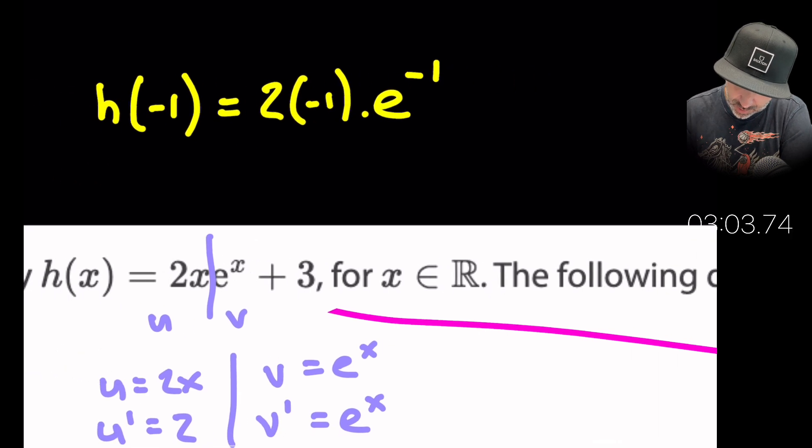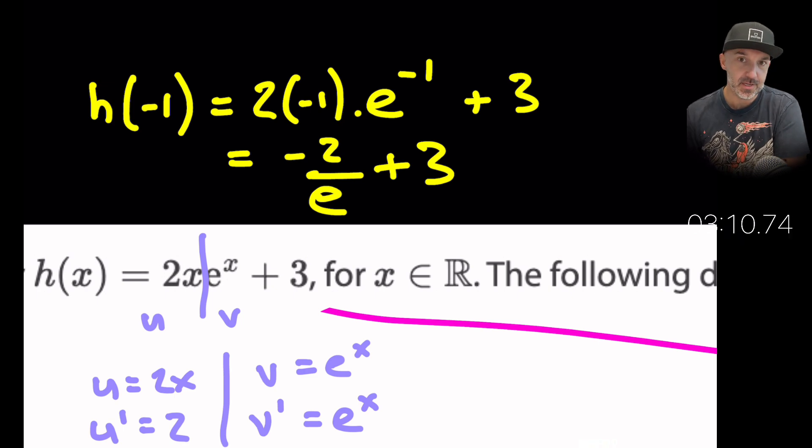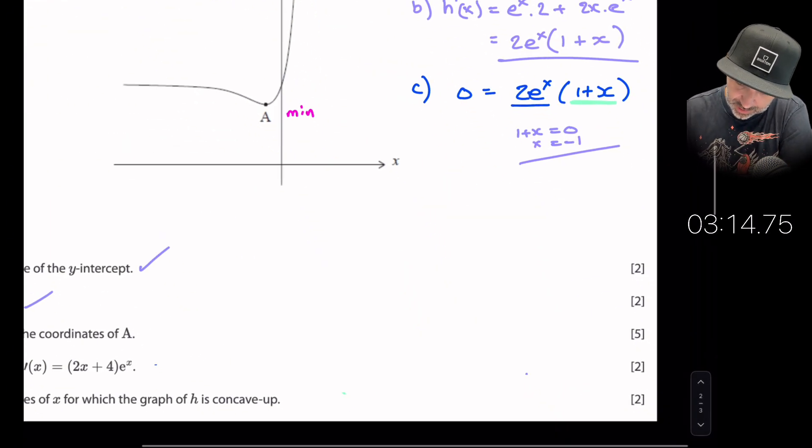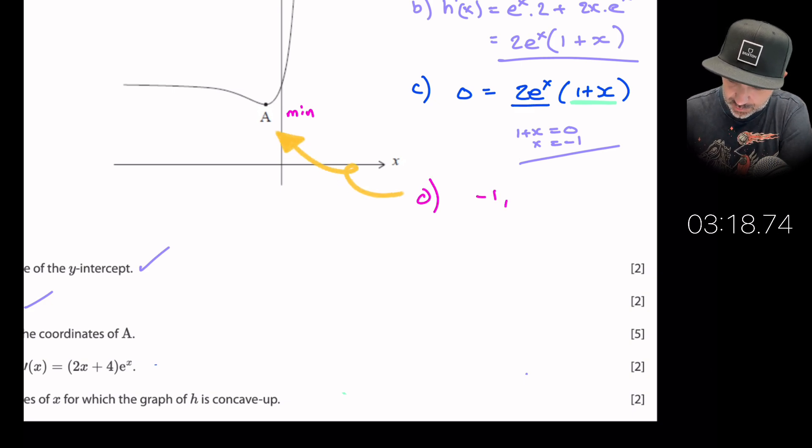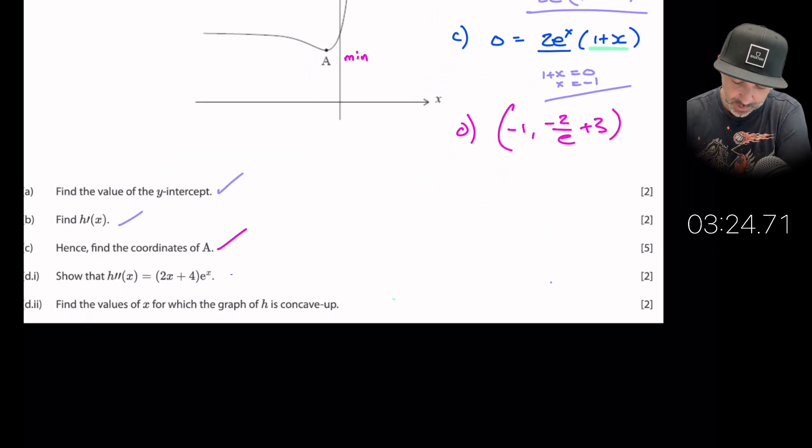Therefore that will leave us with minus two over e plus three. So leaving in terms of e it's negative two over e plus three. So I'm going to go down and put the answer down here. So we have minus one, then negative two over e plus three is the y coordinate. So now we have answered part c.